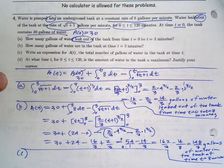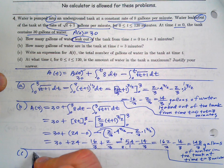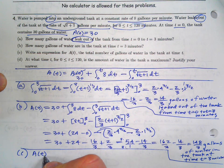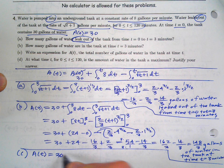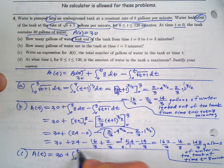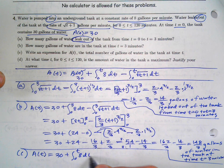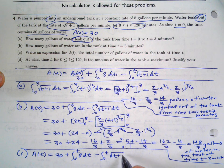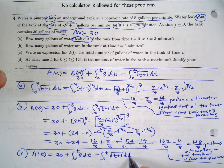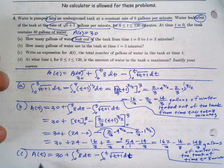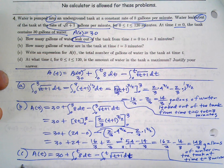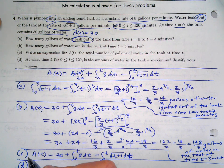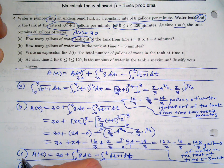Part c says write an expression for A(t), the total number of gallons in the tank at time t. We already wrote that — it's the rate model from before: A(t) = 30 + integral from 0 to t of 8 dt − integral from 0 to t of √(t+1) dt.